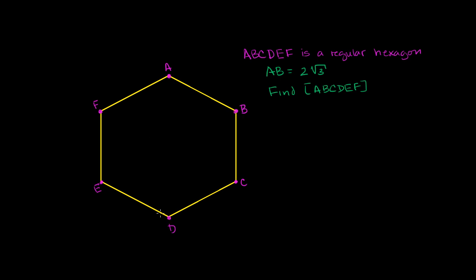We're told that A, B, C, D, E, F is a regular hexagon. The 'hexagon' part tells us we're dealing with six sides, and the 'regular' part lets us know that all six sides have the same length, and all interior angles have the same measure. They give us the length of one side — and since this is a regular hexagon, they're giving us the length of all the sides. It's two square roots of three, so every side is two square roots of three.